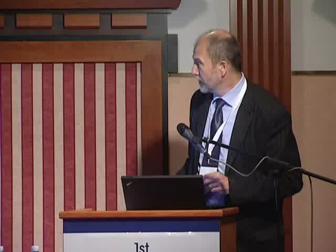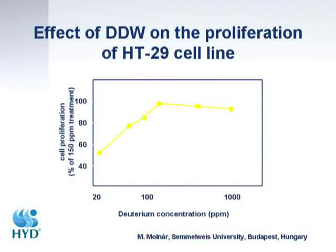Another experiment with HT29, a colon tumor cell line, also showed a clear dose effect. At normal deuterium concentration, growth was typical, but the lower the deuterium concentration, the greater the inhibitory effect on cell growth.